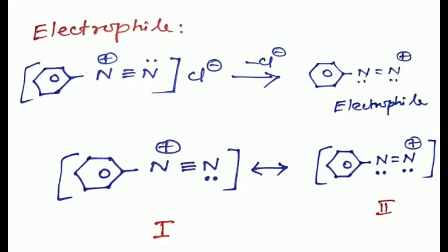For phenol, the solution should be slightly alkaline to convert phenol to the more active phenoxide ion. Regarding electrophile generation, benzene diazonium chloride loses Cl⁻ to give the benzene diazonium ion. It is a resonance hybrid of two forms: structure one is favored when the benzene ring contains electron-donating groups, while structure two is favored when the benzene ring contains electron-withdrawing groups.